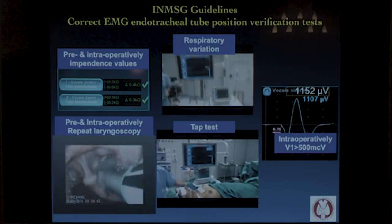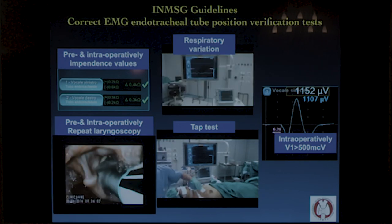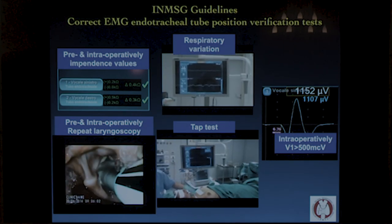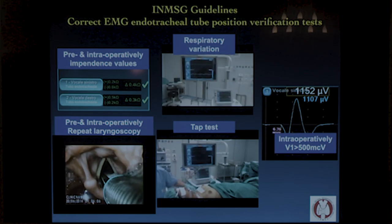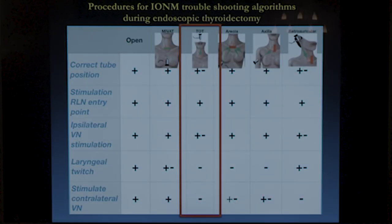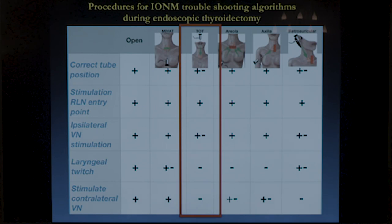We can use all the guidelines for correct EMG endotracheal tube position verification: verifying impedance, intra- and preoperatively verifying tube position, the TAP test, respiratory variation, and B1 greater than 500. However, when we have a problem during monitoring and need to use corrective algorithms — such as correct tube position, stimulation of the recurrent nerve EMG entry point, ipsilateral vagal nerve stimulation, laryngeal twitch, or contralateral vagal nerve stimulation — these surgical maneuvers can be problematic during the endoscopic procedure.